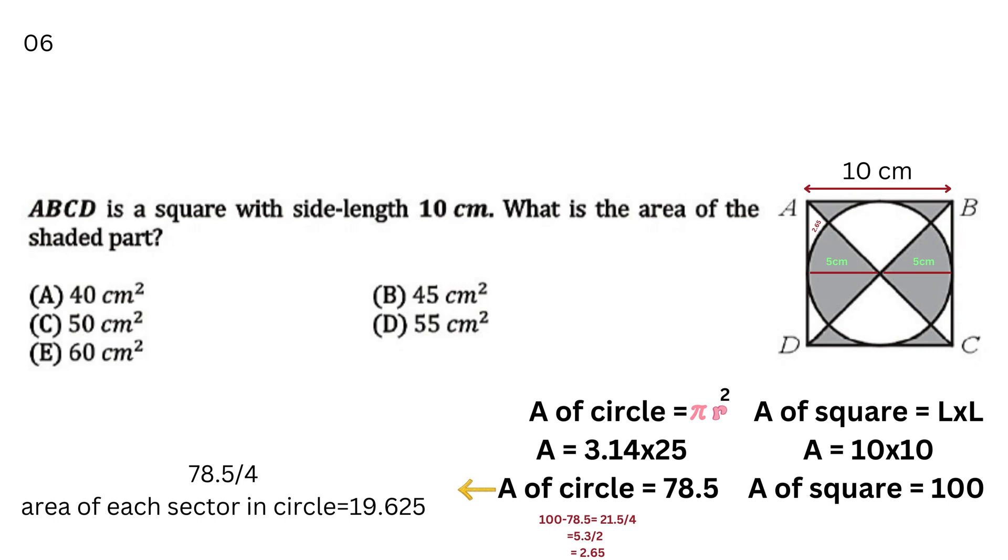A, B, C, D is a square with side length of 10 cm. What is the area of the shaded part? ABCD is a square with one side length of 10 cm. In this diagram, what is the area of the shaded part?